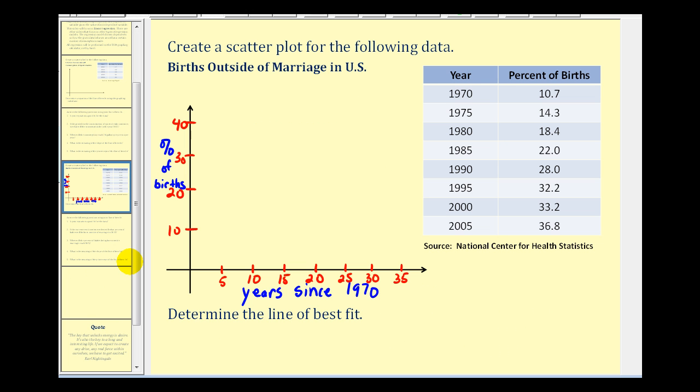For this problem we have data comparing the year to the percent of births outside of marriage in the United States. The first step in data analysis is to create a scatter plot of the data, but normally when the x values are years, they set the first year as the base year, meaning 1970 is when x equals zero. So if this is zero, 1975 would be five, 1980 would be 10, and so on, all the way down to 35.